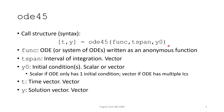ODE45 takes three inputs and gives two outputs. The first input is func, which is the ODE or system of ODEs in anonymous function form. The next input is TSPAN, which specifies your start and end times of the ODE. Finally, Y0 contains your initial conditions. Y0 will be a scalar if there's only one initial condition, but will be a vector if there are multiple initial conditions.